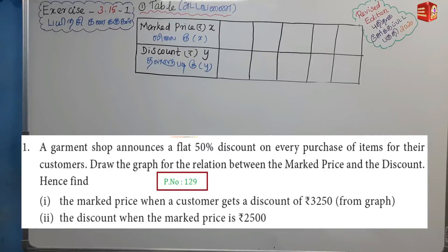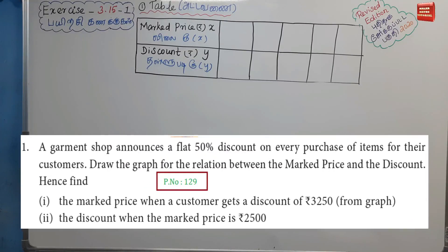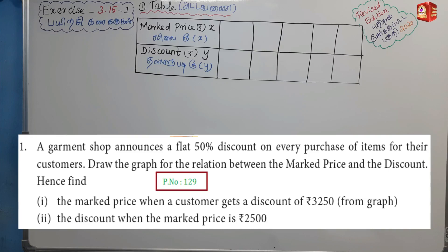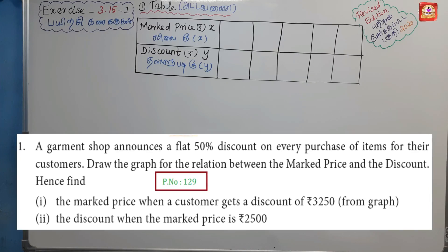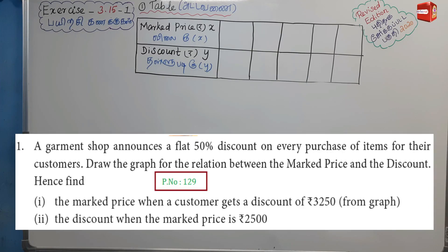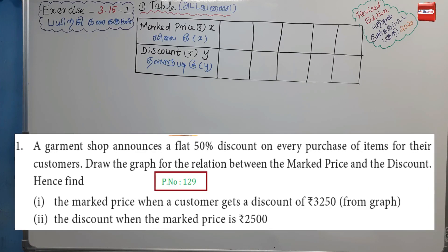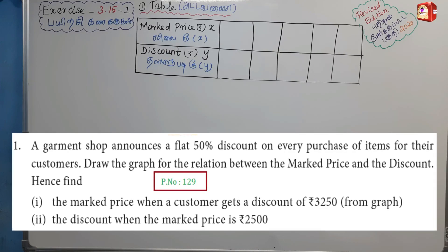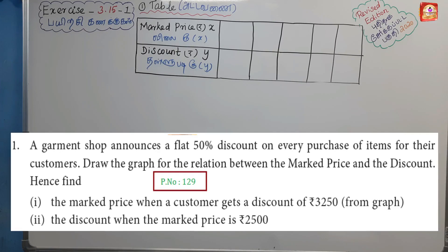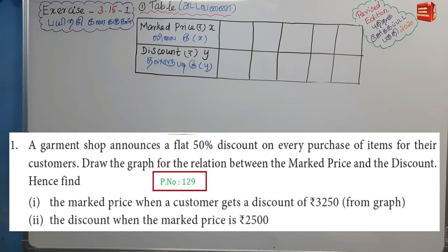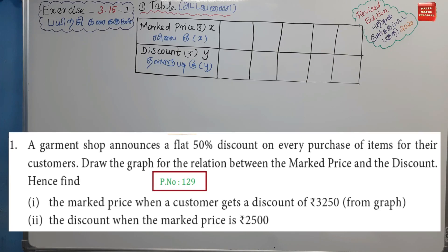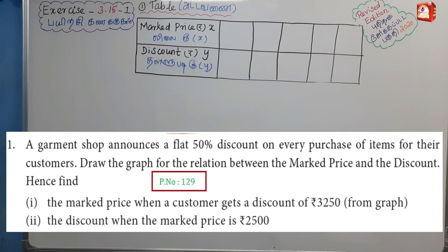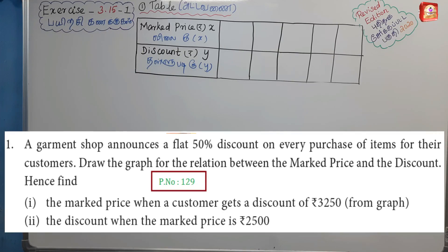Exercise 3.15, first problem. A garment shop announces a flat 50% discount on every purchase of items for their customer. Draw the graph for the relation between the marked price and the discount. Hence find: first, the marked price when a customer gets a discount of ₹3,250 from the graph; second, the discount when the marked price is ₹2,500.